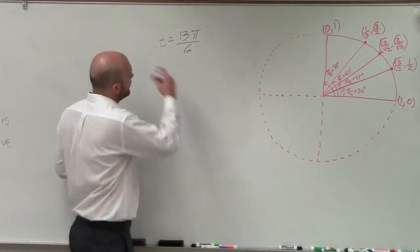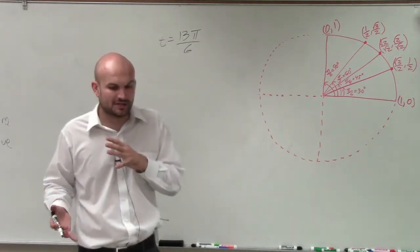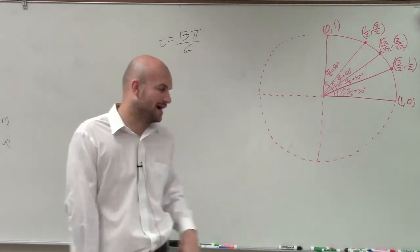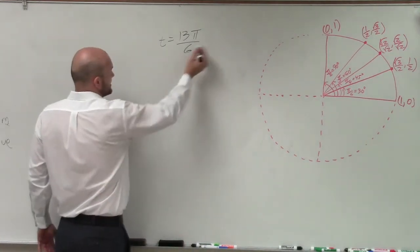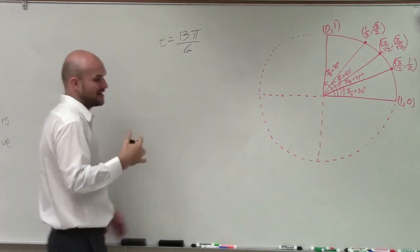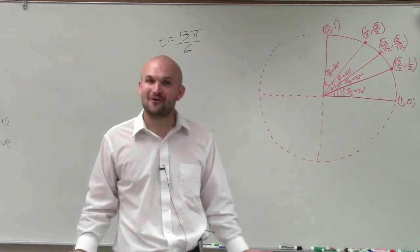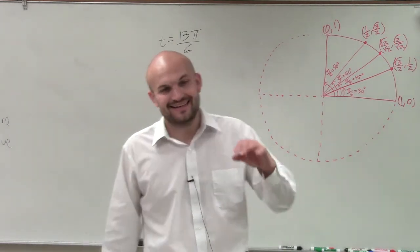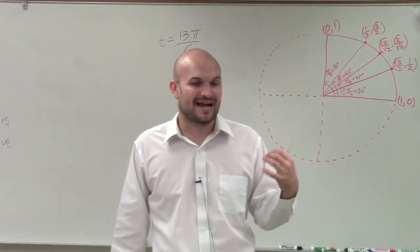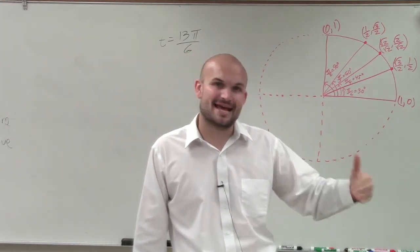So when looking at coterminal angles, remember, all we're going to do is just add and subtract 2 pi. So if I look at this, I'm not going to want to add 2 pi to this, because remember, coterminal angles are angles that have the exact same initial and terminal side.